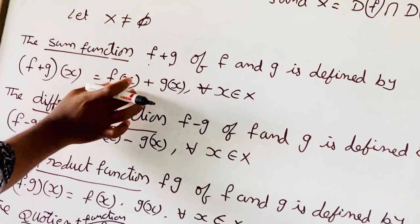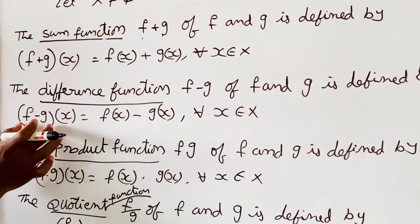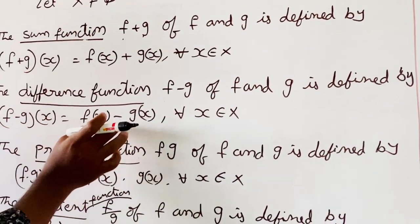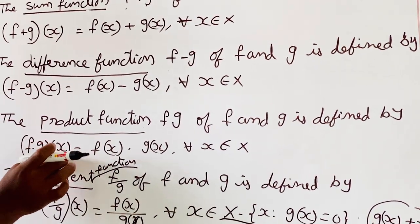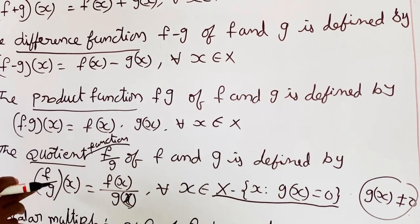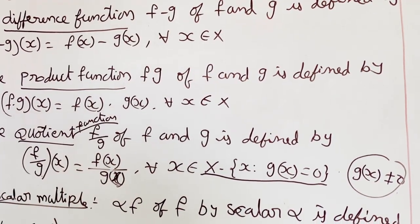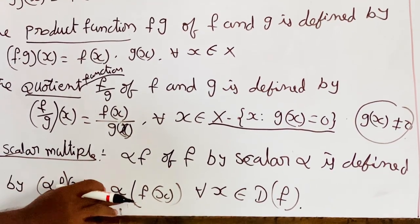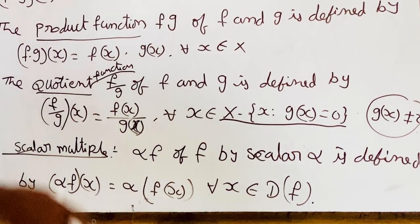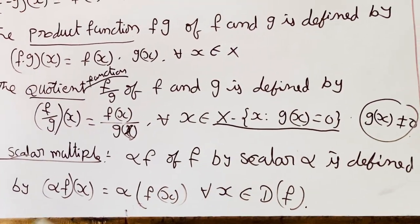So to summarize: the sum function is F plus G of X equals F of X plus G of X; the difference function is F minus G of X; the product function is F into G of X equals F of X into G of X; the scalar multiple is alpha F of X equals alpha times F of X. These are the sum, difference, product, and quotient functions. Let us see an example.